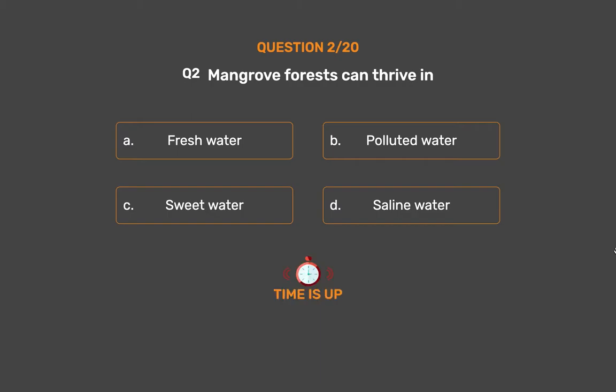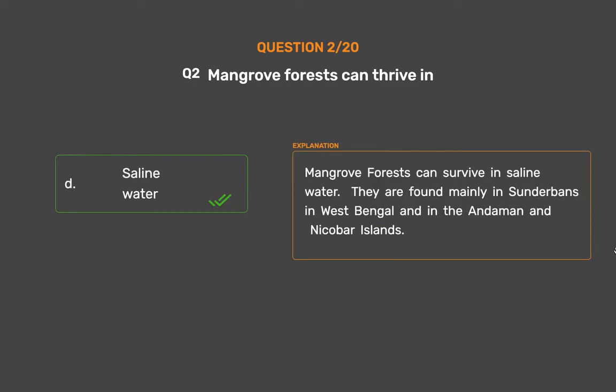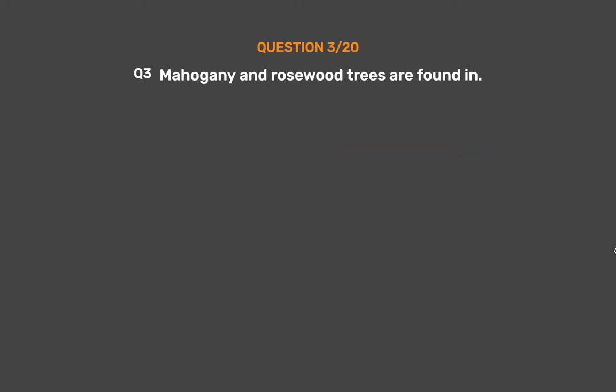The correct answer is Option D: Saline water. Mangrove forests can survive in saline water. They are found mainly in the Sundarbans in West Bengal and in the Andaman and Nicobar Islands.